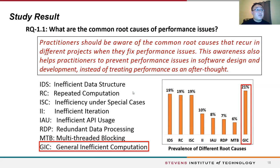The other four types of root causes and their typical resolutions can be found in our paper. The implication is that practitioners should be aware of the common root causes occurring in different projects when fixing performance issues. This awareness also helps practitioners prevent performance issues in software design and development, instead of treating performance as an afterthought.